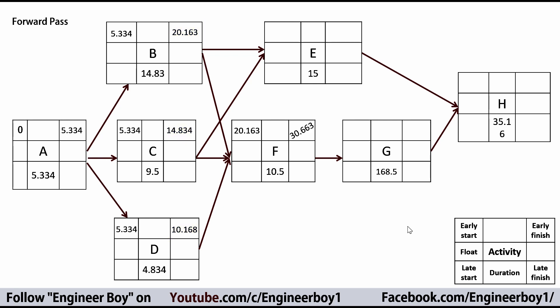Adding the duration of F, which is 10.5, gives 30.663. This is then forwarded to G as the early start of activity G; add the duration to get the early finish of G. For activity E, it has two predecessors B and C, so we take the maximum early finish — that's activity B — forward it to E, add the duration of E which is 15, giving 35.163.